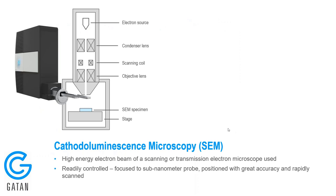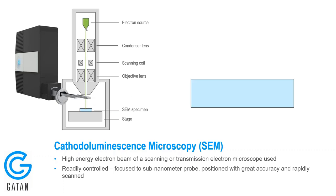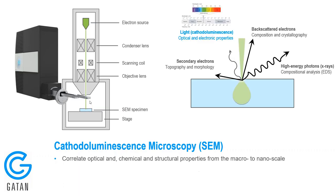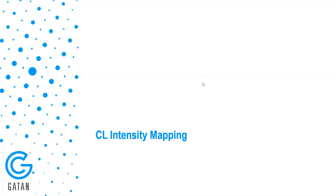Cathodoluminescence is stimulated by an electron beam and acquired or collected into a detection unit. This is a schematic of the SEM chamber with the Monarch unit and the collimating mirror inside the chamber. The electron beam stimulates several different processes inside the material, including x-rays and backscattered electrons. But in cathodoluminescence, we concern ourselves with the light that comes out.